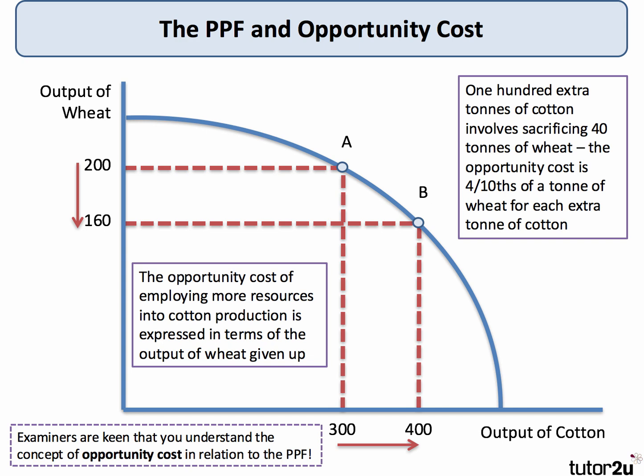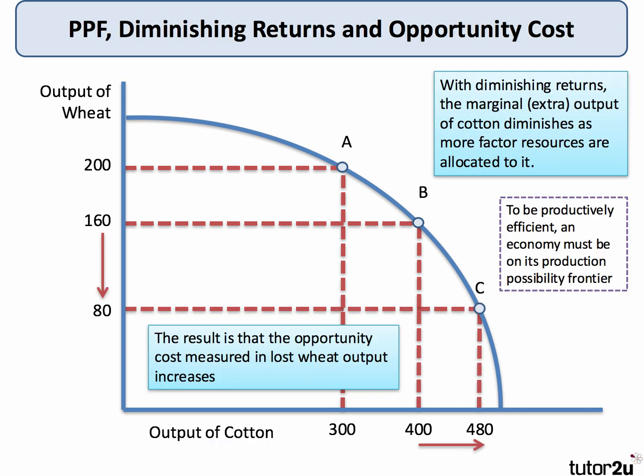However, as we move down the PPF, the opportunity cost changes. The PPF has been drawn as concave to the origin, and this is based on the law of diminishing returns — as we add more resources into a particular output, we get less extra marginal output.